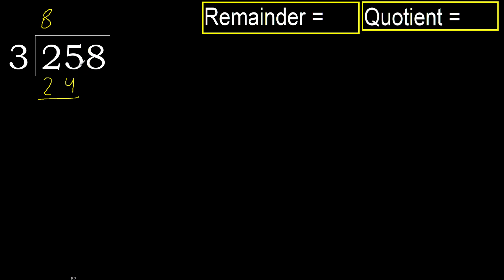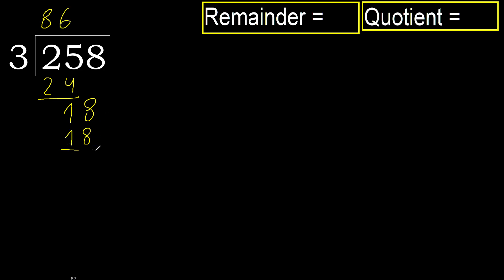25 minus 24 is 1. Next: 18. 3 multiplied by 6 is 18. 18 is not greater, subtract. There is no next number, therefore finish it.